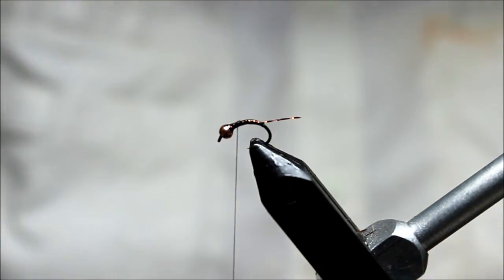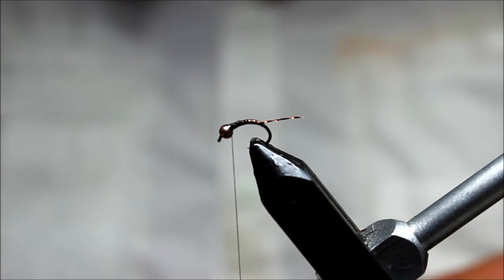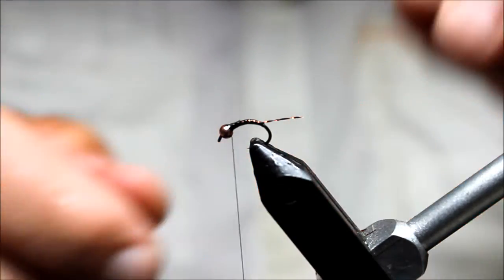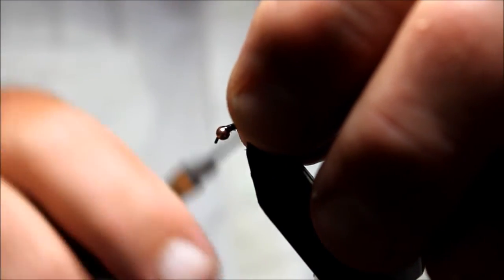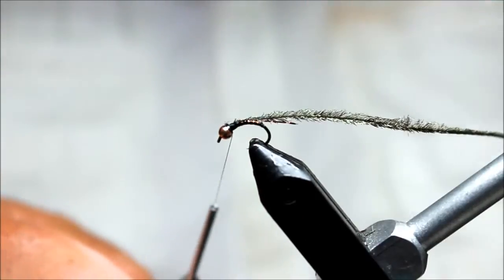There will be times that I'll fish the fly as it sits right here, but other times—and the majority of the time—I do like to add a thorax. Occasionally I'll just use a black dubbing, but in this circumstance, the majority of the time again, I'm going to use a peacock curl.